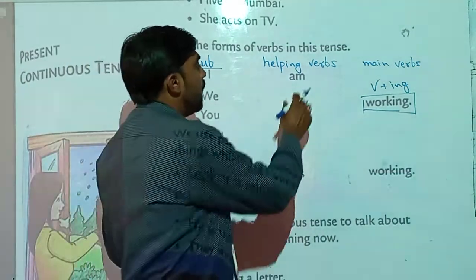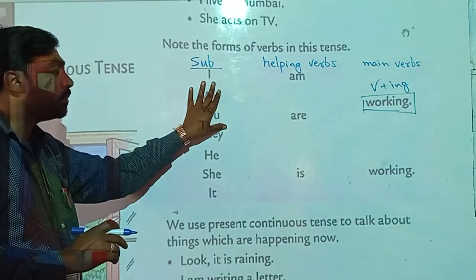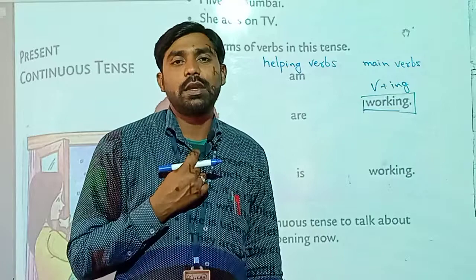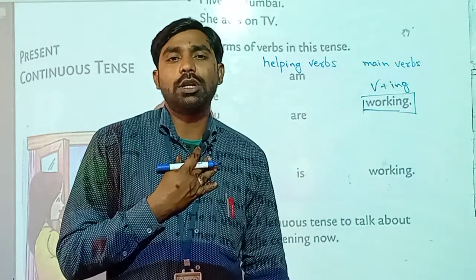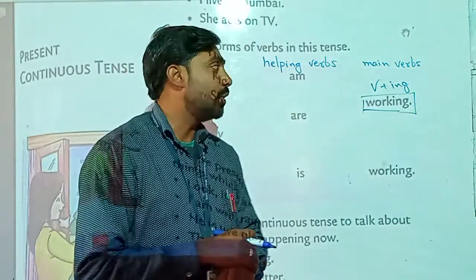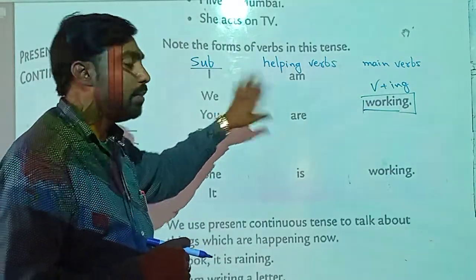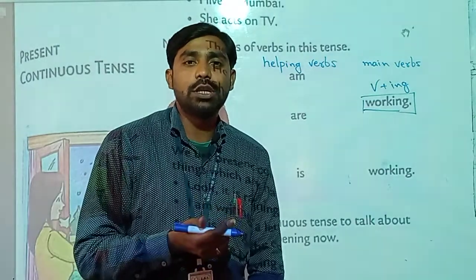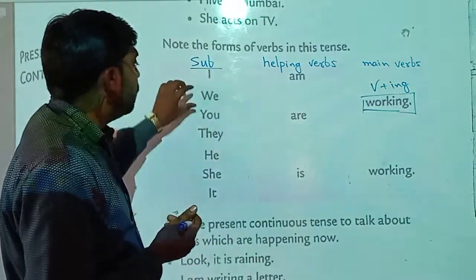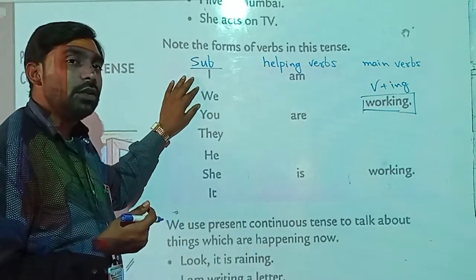Now, what about I, AM, ARE, and IS? If the subject of the sentence is first person singular — if we are talking about ourselves and I am alone — then we should use AM as the helping verb in present continuous tense. For example: I am writing, I am speaking, I am looking, I am watching, I am studying, I am going.